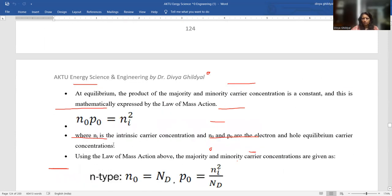One numerical of two marks was asked on this expression, law of mass action. At equilibrium, the product of majority and minority. Majority means if electrons are more, they become the majority. If holes are more, they become the majority. And obviously, if electrons are majority, then holes will become minority and vice versa is a constant. And this is mathematically expressed by law of mass action. N0 p-naught is equal to Ni square, where Ni is the intrinsic carrier concentration. And N0, p-naught are the electron and hole equilibrium carrier concentrations.